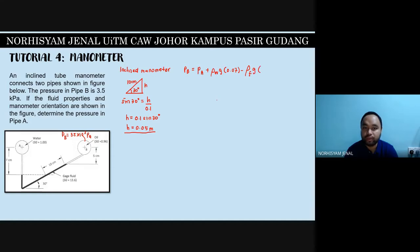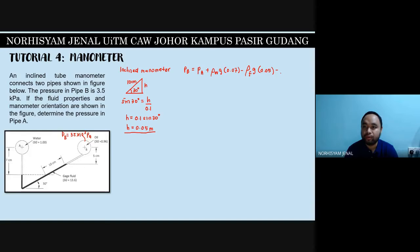We have the height H = 0.05 for the gauge fluid term. Then for the final part, which is oil — the starting point is also lower than the ending point, so it is minus rho_oil × g × 0.05.